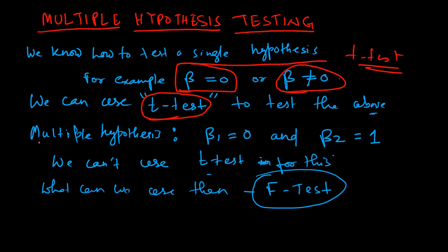What if we have multiple hypotheses in place? For example, we want to test beta 1 equals 0 and beta 2 equals 1 — that means we want to test both hypotheses at the same time.